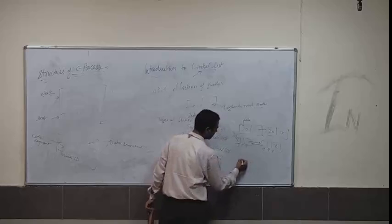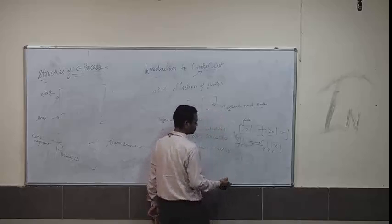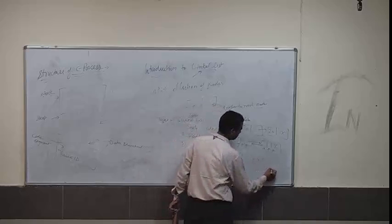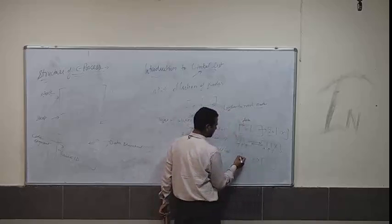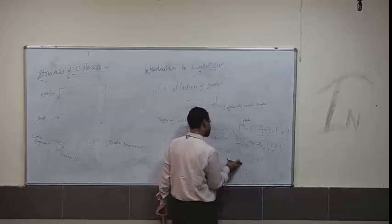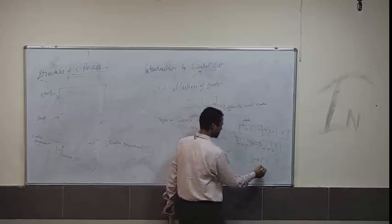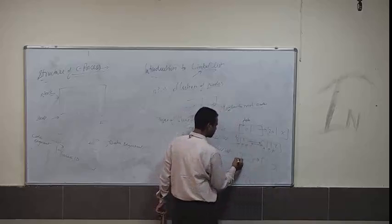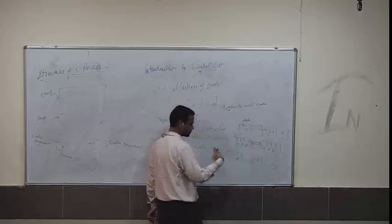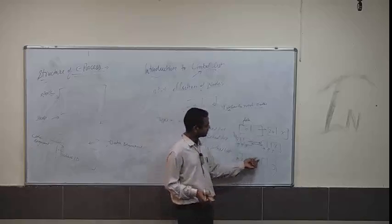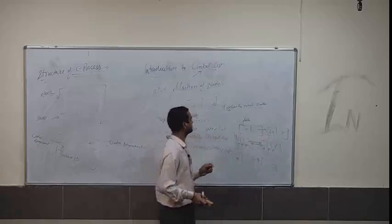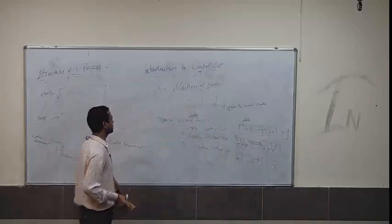In circular linked list, suppose there are two different nodes. This node contains the address of that node, and that node contains the address of this node, forming a circular shape. So in circular linked list, there is no null part in any node. This is the different kind of linked list.